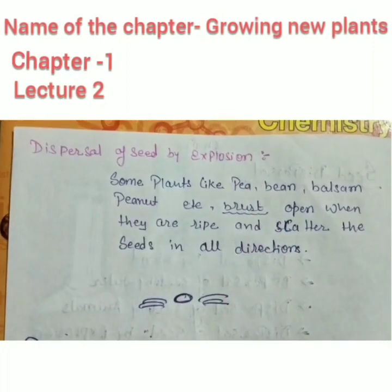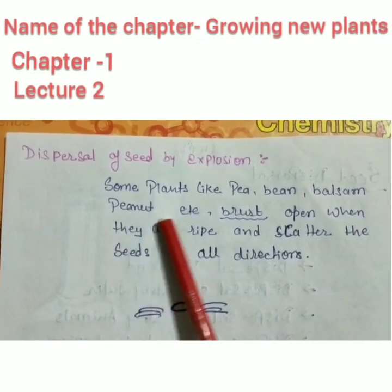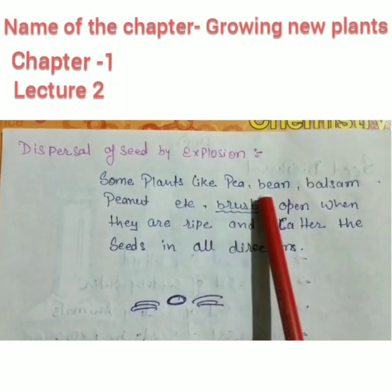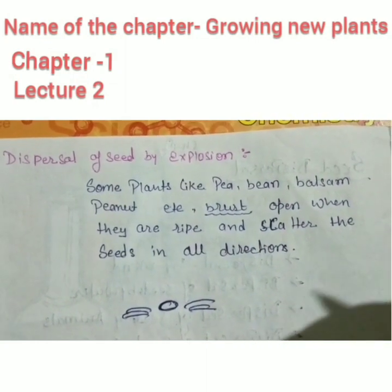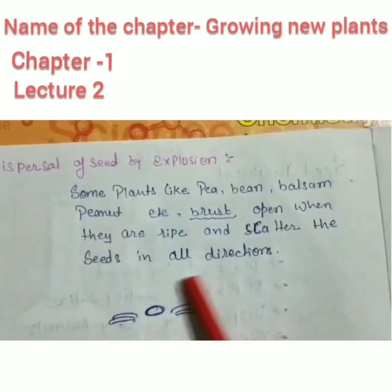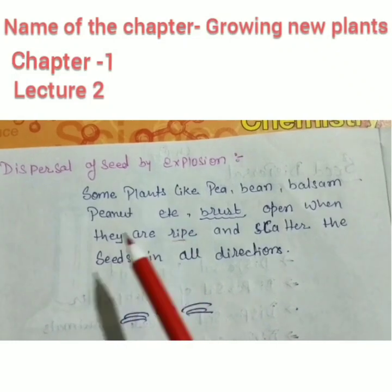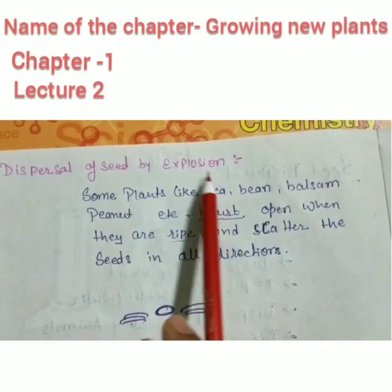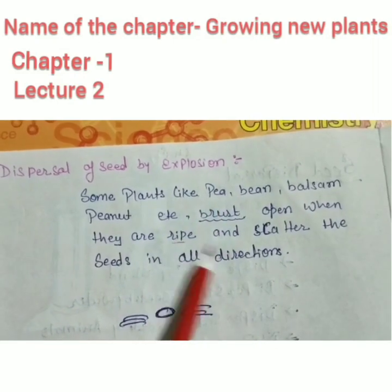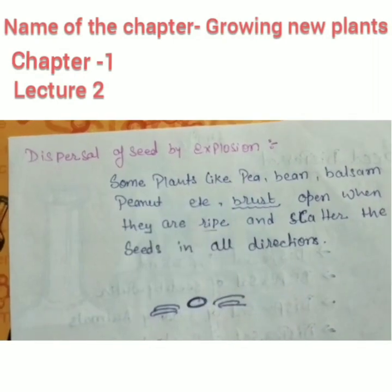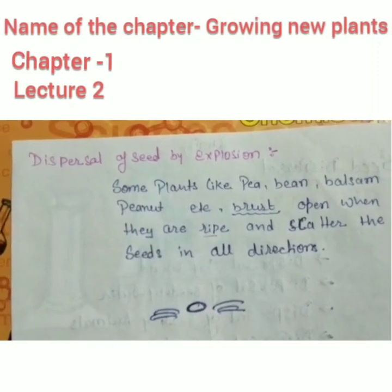Dispersal by explosion: some plants like pea, bean, balsam, and peanut burst open when their fruits become ripe. When they become ripe, they automatically burst open and scatter the seeds in all directions. So these types of seeds are dispersed by explosion — when fruits become mature, they automatically explode and the seeds are dispersed in all directions.